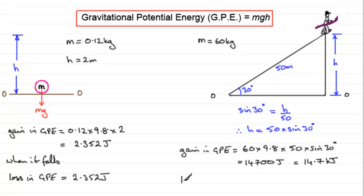And when this person jumps on their toboggan again, they're going to lose gravitational potential energy. And that's going to be exactly the same amount as their gain in gravitational potential energy. 14.7 kilojoules.